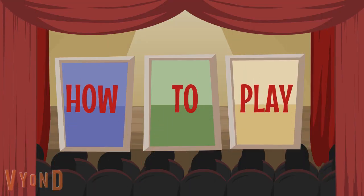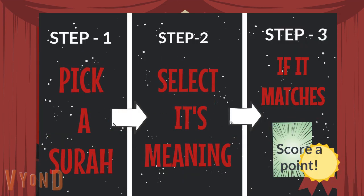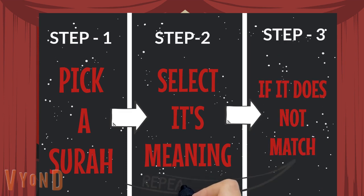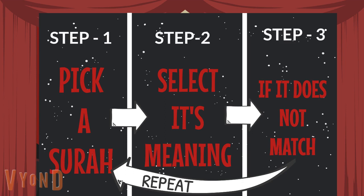Let us now learn how to play this game. Step 1: Pick a surah. Step 2: Select its meaning. Step 3: If the surah matches with its meaning, then the player receives a point. If the surah does not match with its meaning, then repeat — go to Step 1.